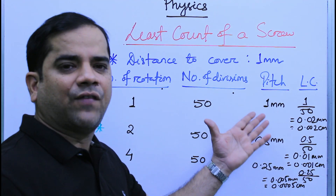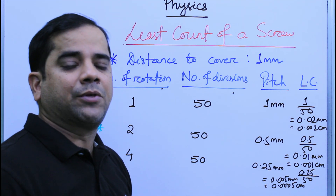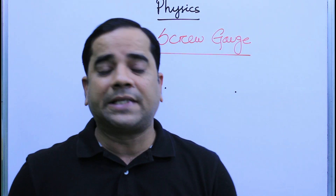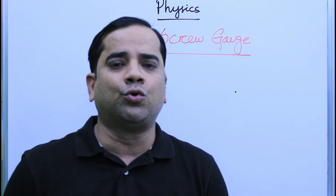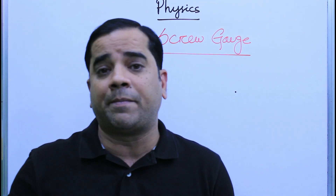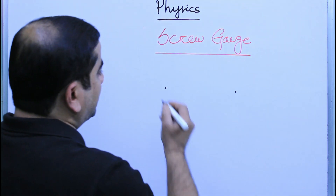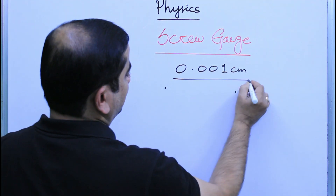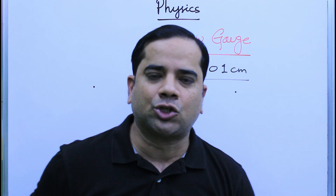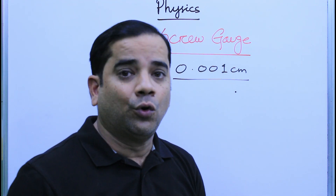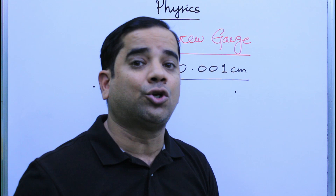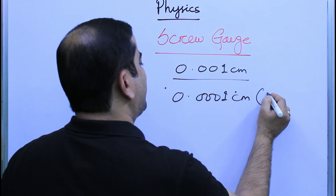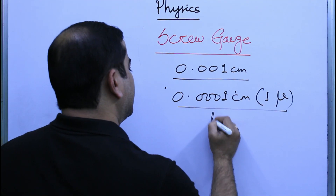Now let us discuss the screw gauge. A screw gauge is a measuring instrument generally used to measure the diameter of a wire, the thickness of a paper, and so on. We can measure up to the third decimal point, meaning up to 0.001 centimeter accuracy. In the case of a micrometer screw gauge, we can achieve a least count of 0.0001 centimeter, which is one micrometer.